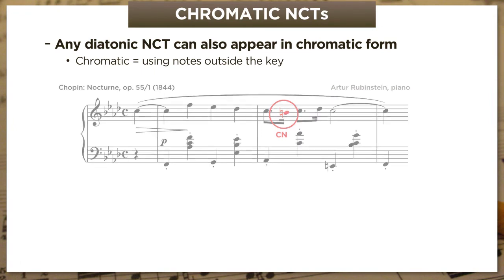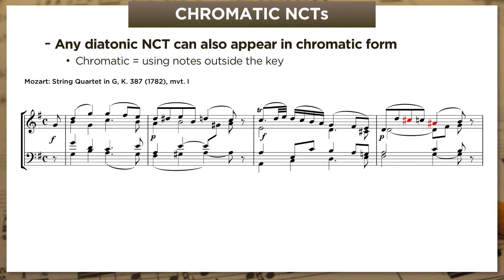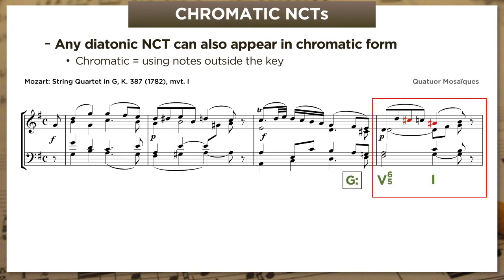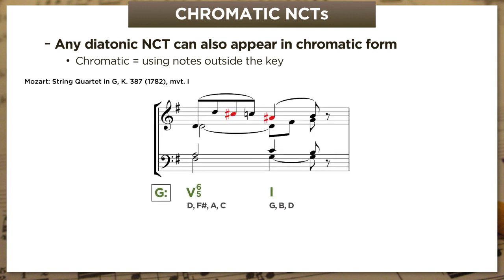For two more examples of chromatic non-chord tones, let's look at the opening of Mozart's G major string quartet. In bar four—with a 5-6-5 moving to tonic—the red C-sharp connects chord tones C and D natural by step: a chromatic passing tone, in by step and out by step in a single direction. By contrast, the red A-sharp is approached by leap but resolves by step: a chromatic appoggiatura—in by leap, out by step.